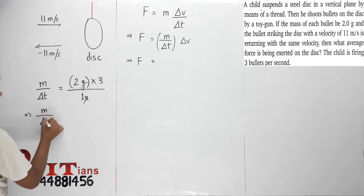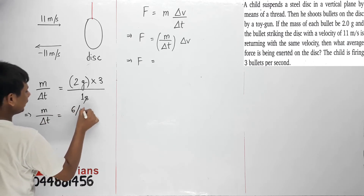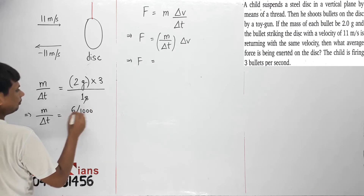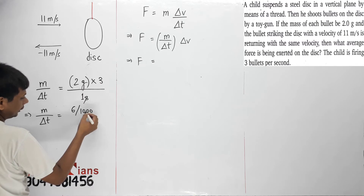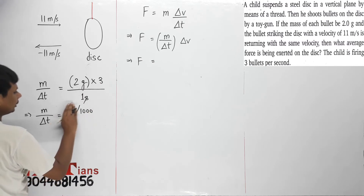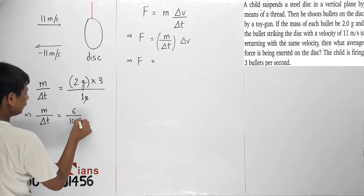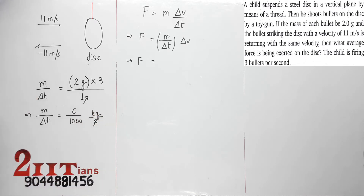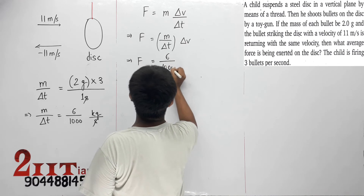Ab hum kg mein kar dete hain. m by delta t is equal to 6 divided by 1000 kg per second. 6 gram ko kilogram mein kiya, to divide by one thousand hoga. m by delta t ko seedha yahan rakh diya jata hai, yahan pe thoda hoshyari ki.